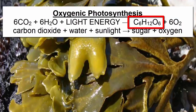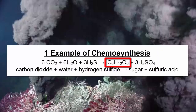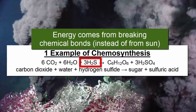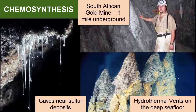Although photosynthesis is by far the most common form of sugar synthesis at work on Earth today, another process at work where light is absent is called chemosynthesis. Instead of harnessing energy from the sun, chemosynthesis harnesses energy held within chemical bonds of gases and minerals. We see chemosynthesis happening today in a number of dark locations, including deep in underground mines, at the bottom of the sea floor where gases seep out of cracks and sediments, and in caves near sulfur-rich mineral deposits.